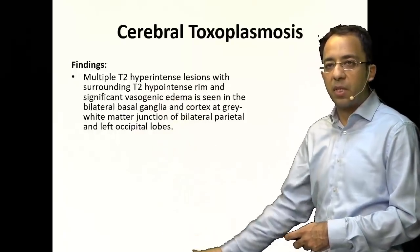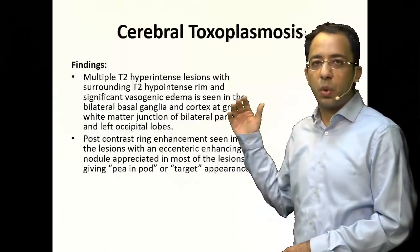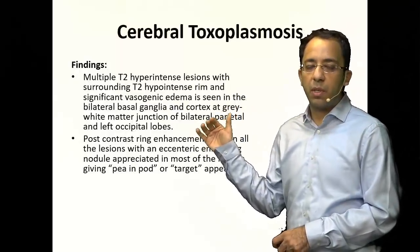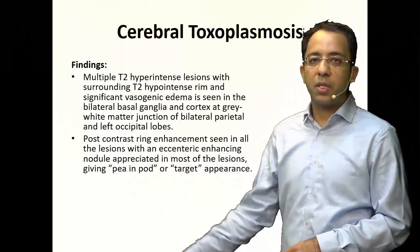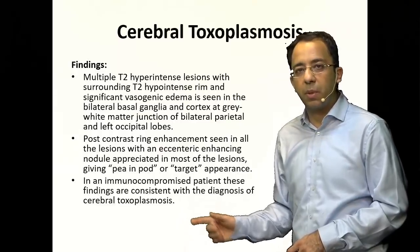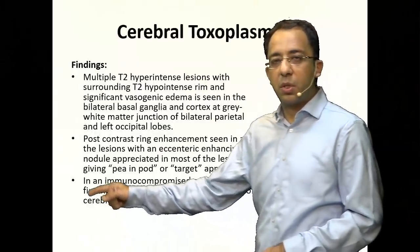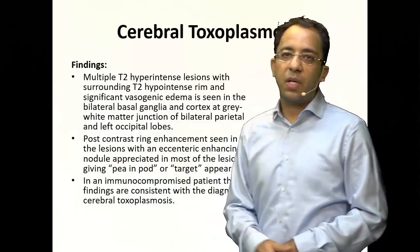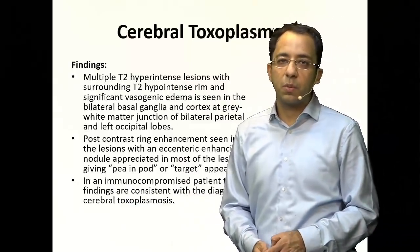To summarize the findings: multifocal lesions in the basal ganglia and gray-white matter junction area, with the contrast-enhanced image showing eccentric enhancement and a nodule within — called the eccentric target sign. This is very typical of CNS toxoplasmosis in an immunocompromised patient.